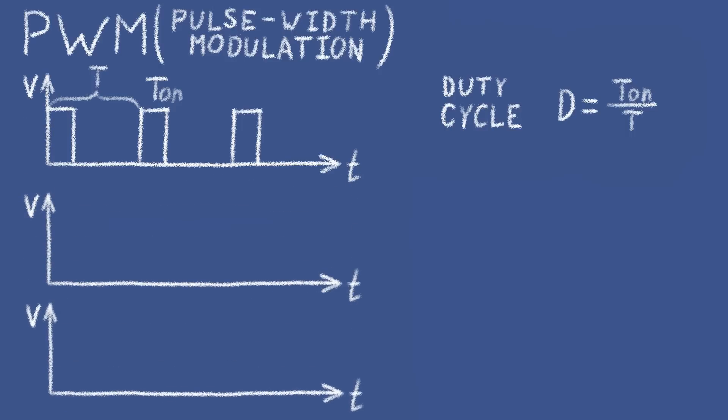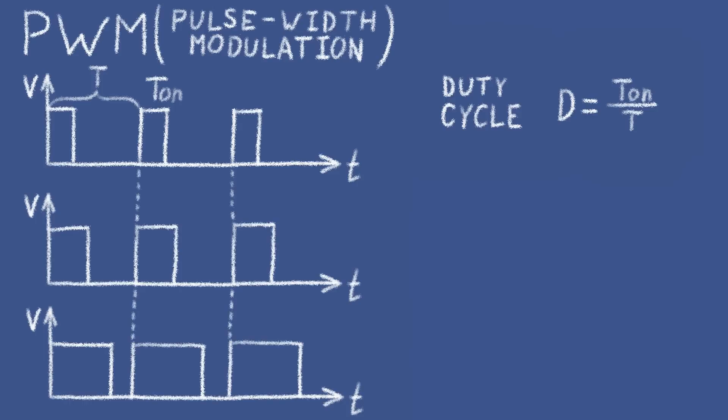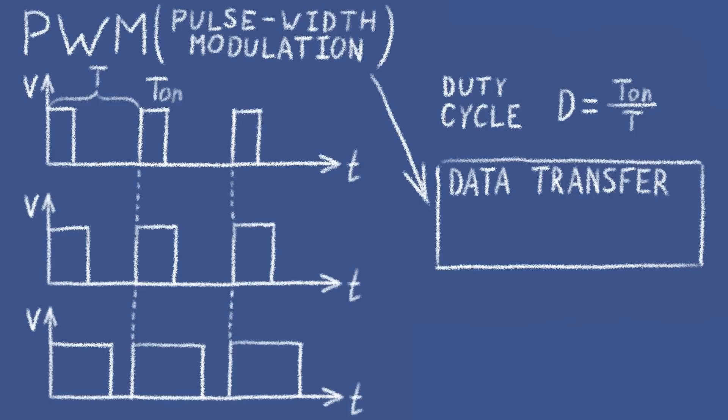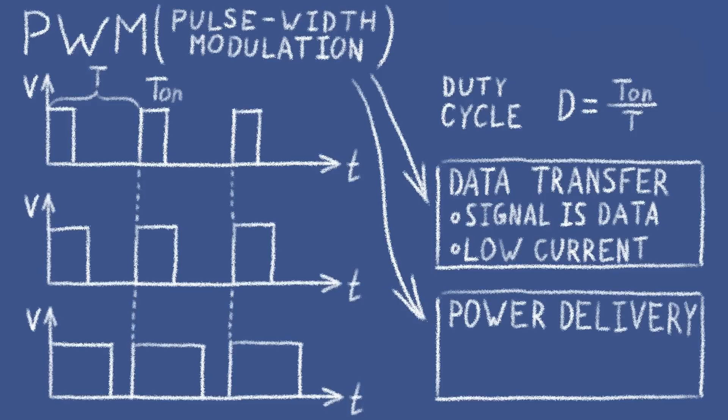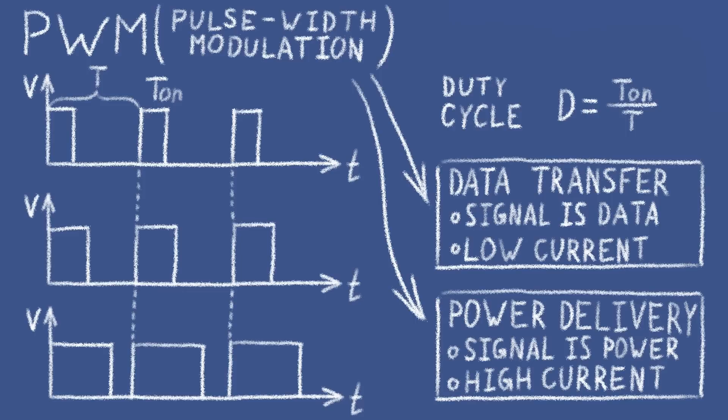The duty cycle can vary, that's the main feature of the PWM signal. The PWM signal could be used for data transfer. We can encode some data to a duty cycle value and transmit it with the PWM signal. That's exactly what regular hobby servomotors use to change the setpoint. In the case of data transfer, the current flowing is usually very small. But PWM could also be used to regulate power delivery. For example, applying a PWM signal to a heater element will make the heater's power proportional to the duty cycle. It's a widely used way to regulate the power of heaters, motors and other devices. In this case, because we deliver the power with the PWM signal, the current could be very high. In fact, in many cases, these two different types of PWM signals go together.